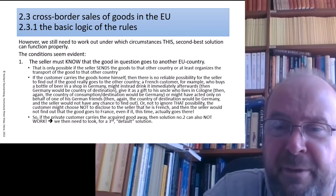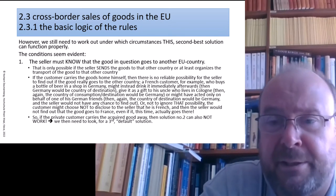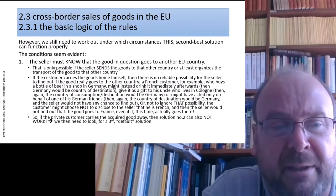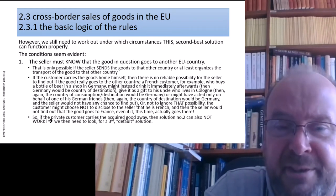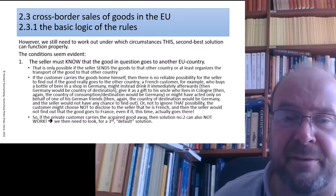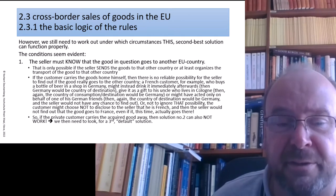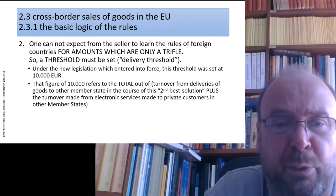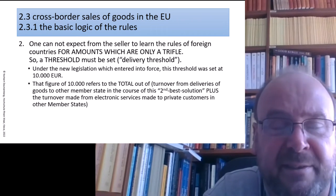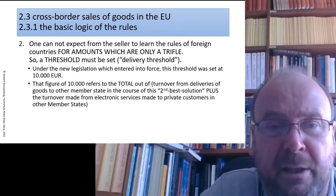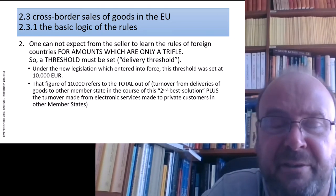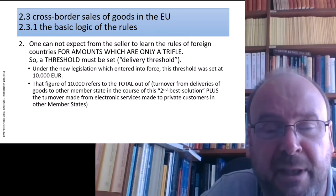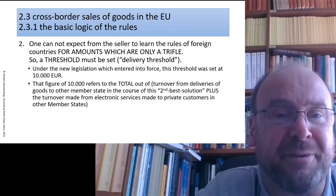Under which circumstances does this second-best solution also not work? The first condition is evident: the seller can only pay taxes in France if he or she knows that the good goes to France. That is only possible if the seller sends the good there himself or is at least involved in the organization of the transport. If the customer shows up in your shop, buys a bottle of beer and leaves, you never know if that bottle will be consumed in Germany, Belgium, on the journey home, or in Paris. You can't demand proof from a private person. So the first condition for the second-best solution is it can only apply if the seller sends the good to the country of destination. The second condition: you cannot really expect a German deliverer to work himself into French tax law, learn French tax declarations, and obtain a French taxpayer identification number just for one euro. So there must be a threshold — called the delivery threshold.